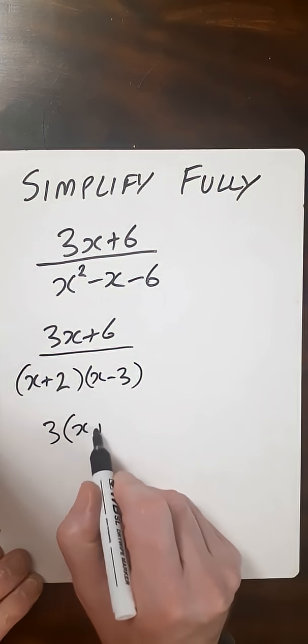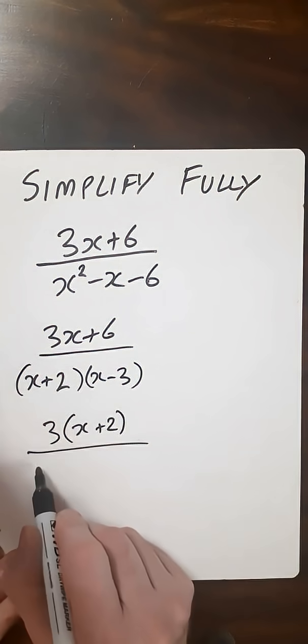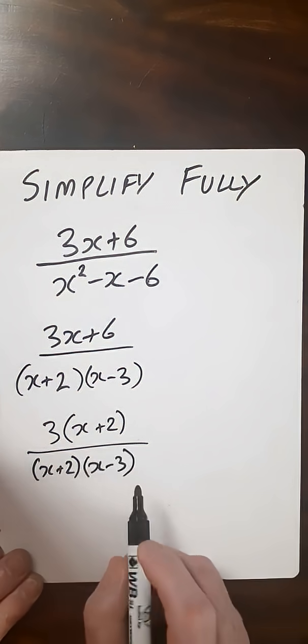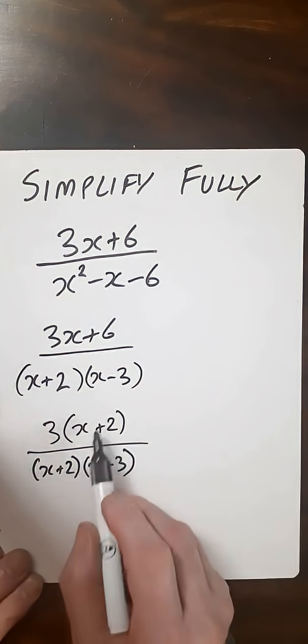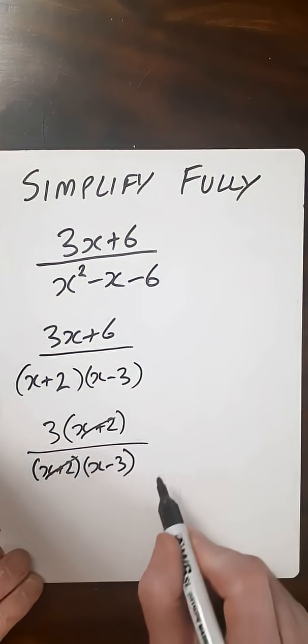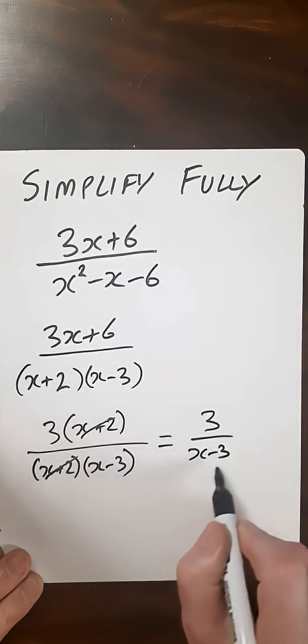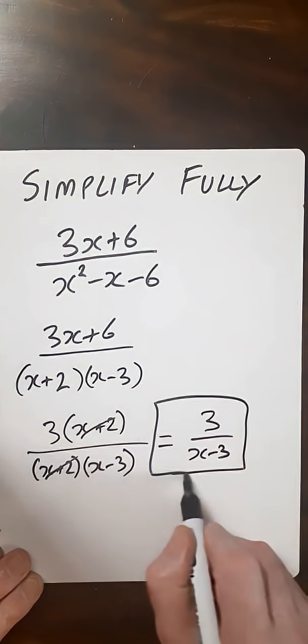So 3 times (x plus 2) and then we've got (x plus 2)(x minus 3), and we can see now that these two x plus 2s will cancel out. Then that will give us 3 over x minus 3, and we are done.